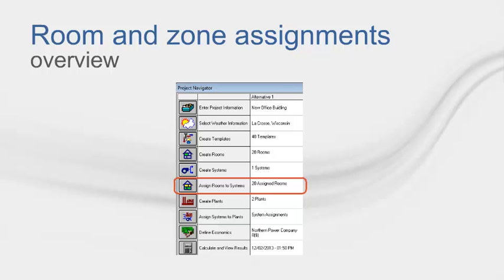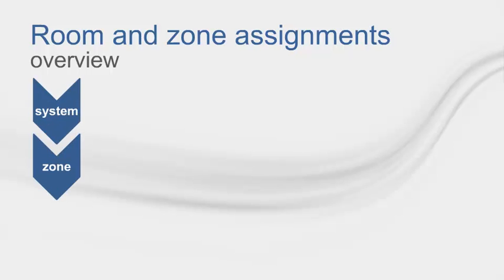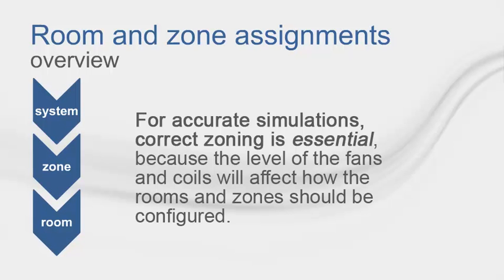Basically, you are specifying the air path. Air side systems can have system, zone, and room level coils and fans. For accurate simulations, correct zoning is essential because the level of fans and coils will affect how the rooms and zones should be configured.